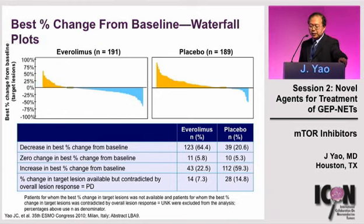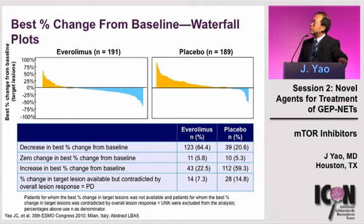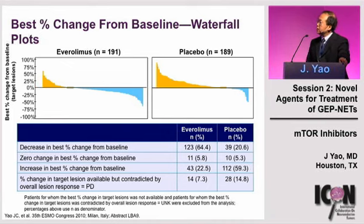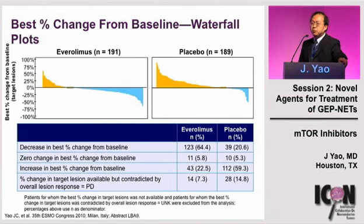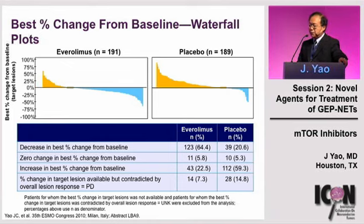Another way to assess response — rather than using RECIST response rate — is waterfall plots, which display best percentage change in tumor measurements for each patient. Patients in blue experienced tumor shrinkage or stabilization as best outcome; patients in yellow experienced tumor growth. Even from the back of the room, you can see more patients experiencing stabilization or tumor shrinkage in the everolimus arm.